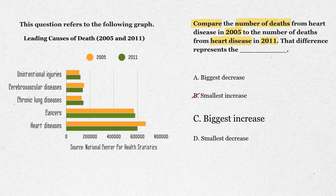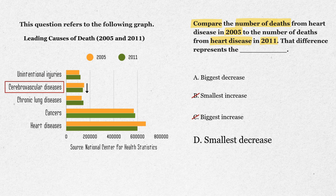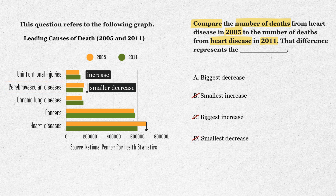Option C: biggest increase. Nope, the bar got smaller, not bigger. Option D: smallest decrease. That doesn't fit either, because cerebrovascular disease had a smaller decrease — heart disease had the biggest one. So the best match here is A, biggest decrease.